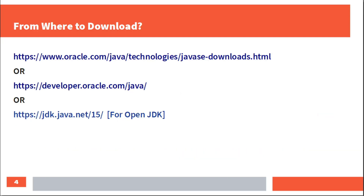Now, where do we download? Oracle JDK download links are oracle.com, Java Technologies, Java SE Downloads, and developer.oracle.com/java. OpenJDK is available at jdk.java.net/15.